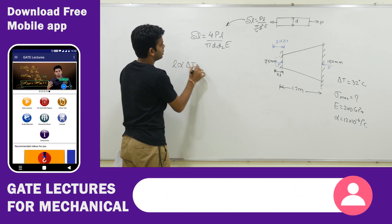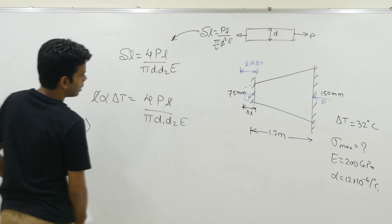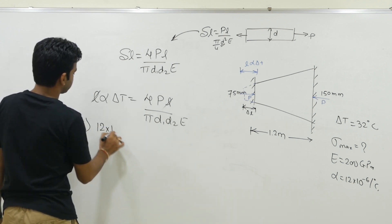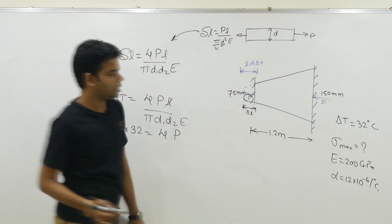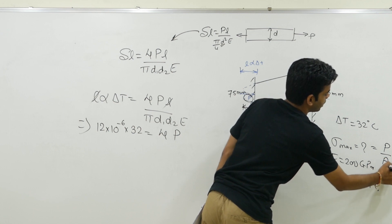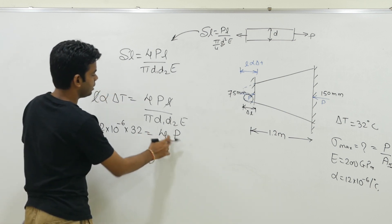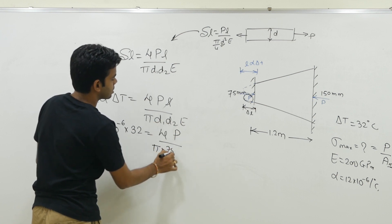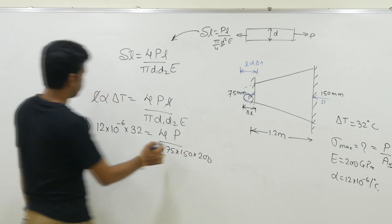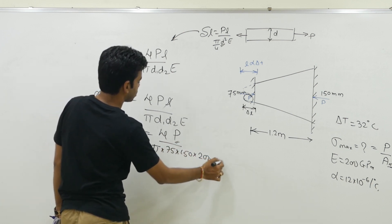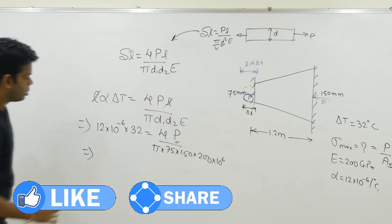Equating: L·α·ΔT = 4PL/(π·D1·D2·E). The L cancels out. Alpha is 12 × 10⁻⁶, ΔT is 32°C, D1 is 75 mm, D2 is 150 mm, and E is 200 GPa. To keep units consistent — since diameters are in mm — convert E to N/mm² (MPa) by multiplying by 10³. That way the answer for P will come out directly in newtons. From here, P = 2.16 × 10⁵·π newtons.